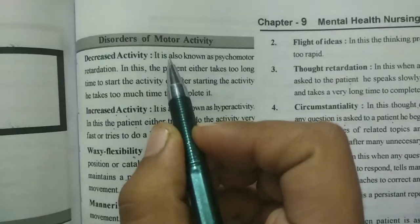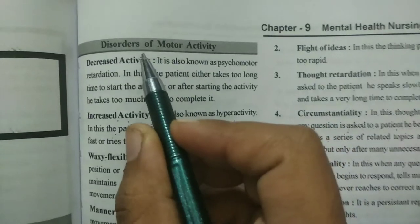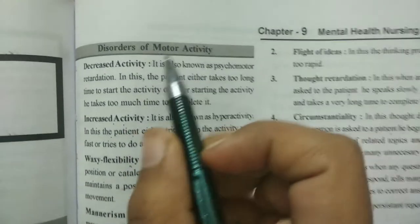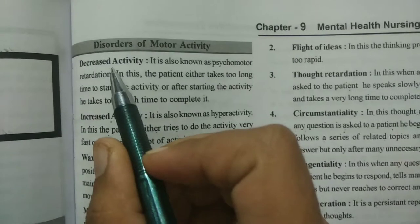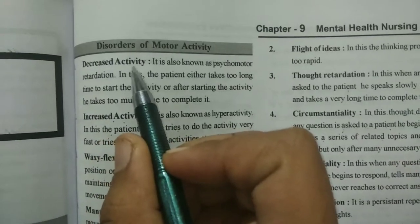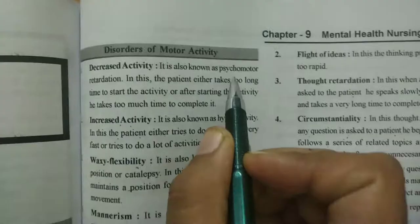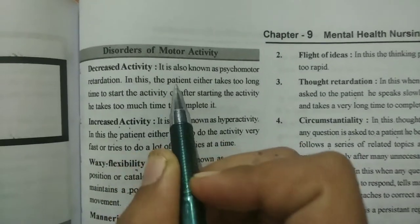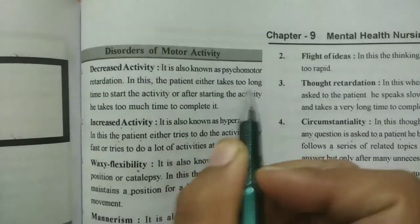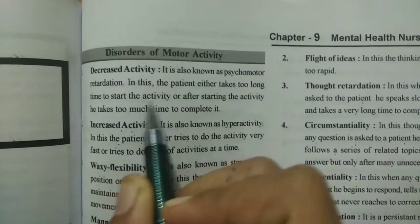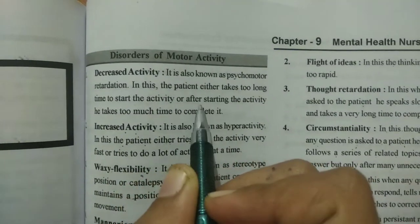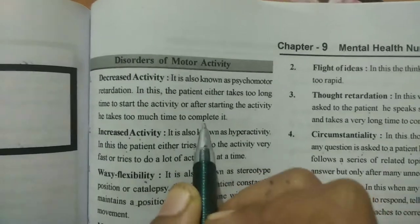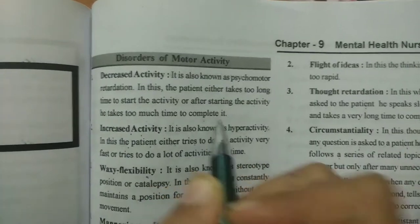Hi guys, thank you so much for watching my video. Today we are going to talk about some terminology in psychology. First is decreased activity, also known as psychomotor retardation. In this, the patient either takes too long to start the activity, or after starting the activity, takes too much time to complete it.